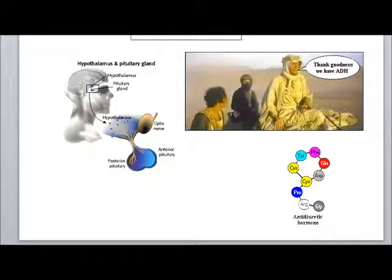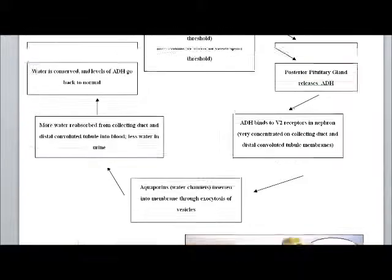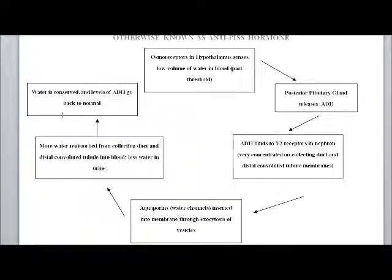Here you can see where the posterior pituitary gland is located. It's right under the hypothalamus, and it's the back portion of the pituitary gland. That posterior pituitary gland creates and releases ADH,